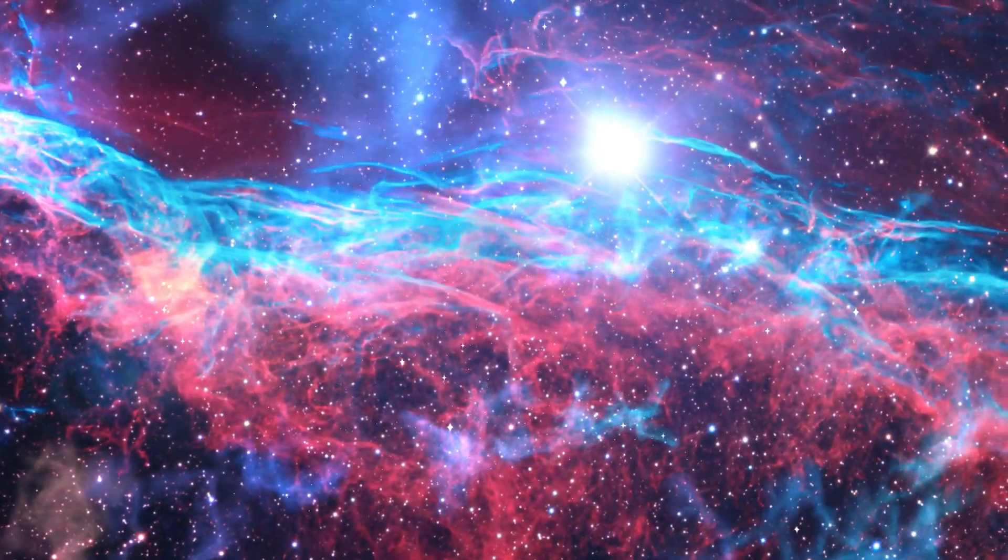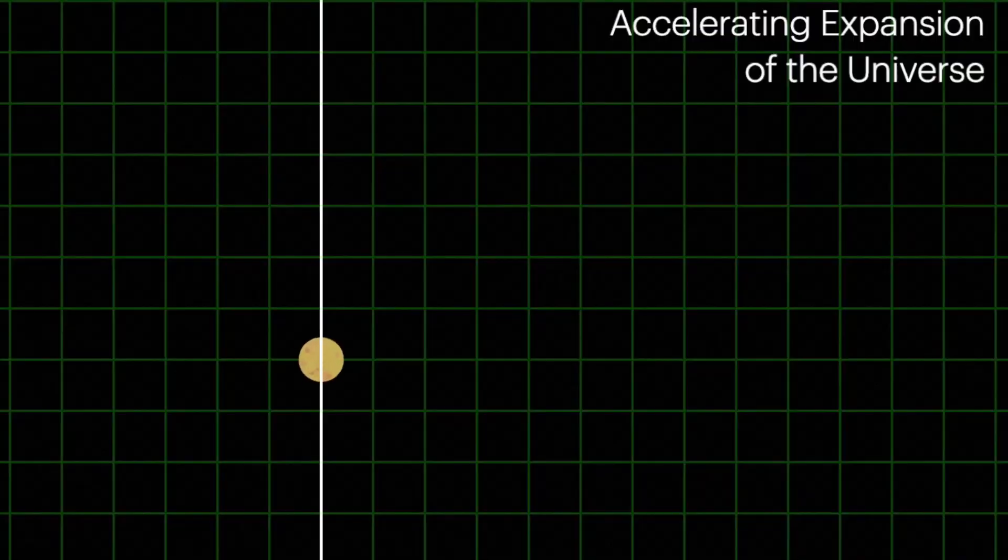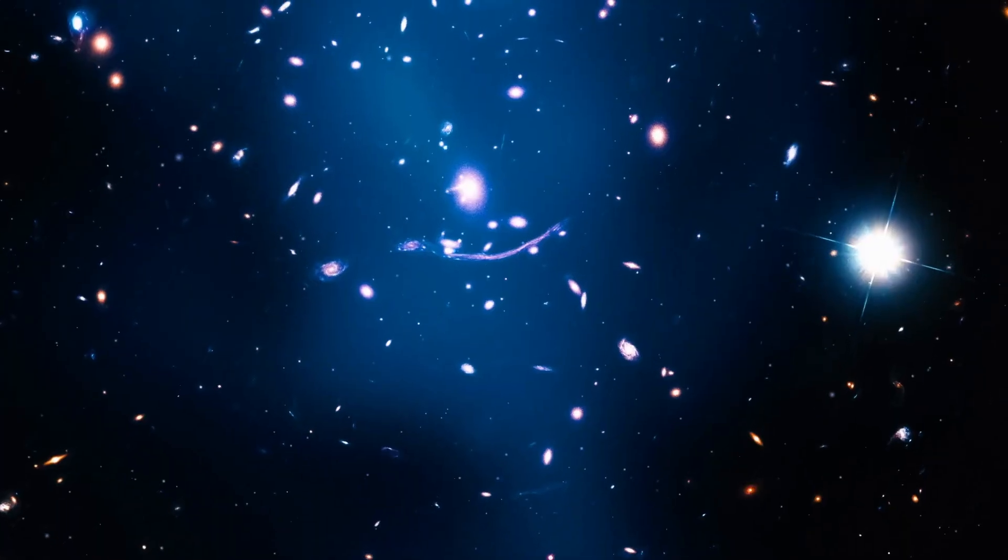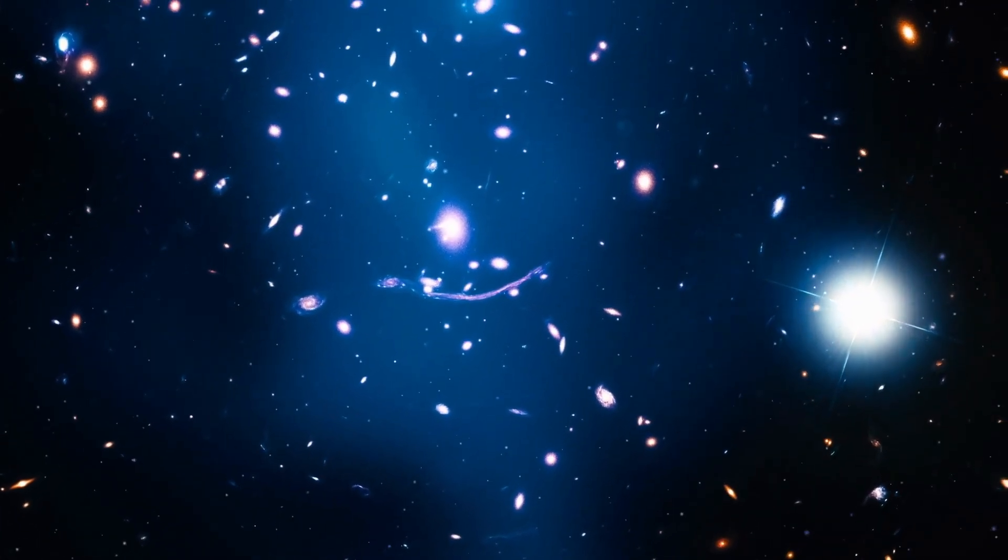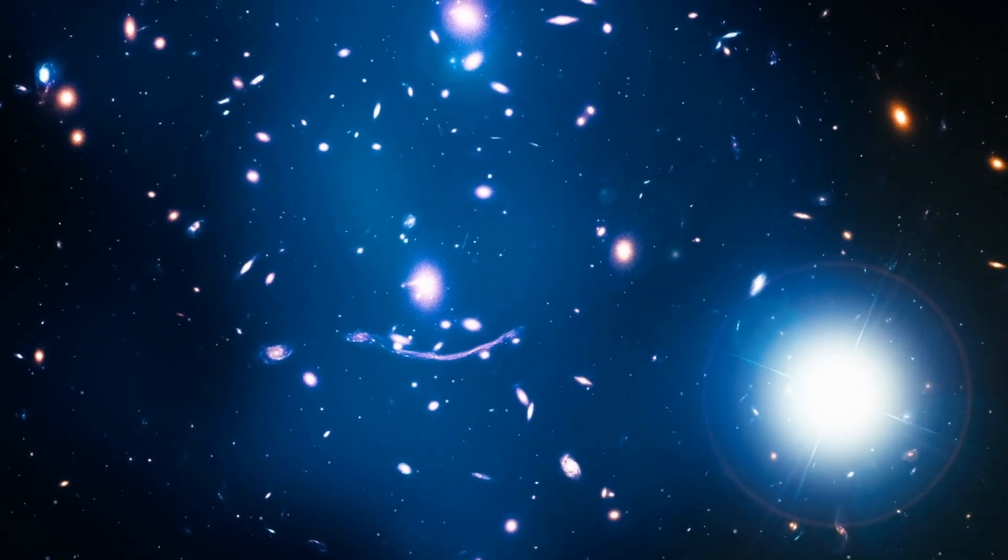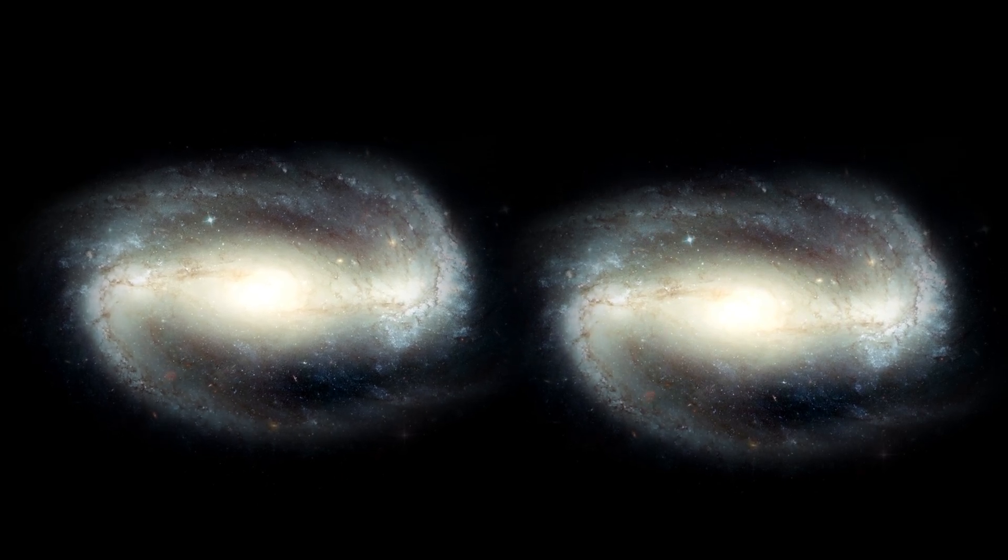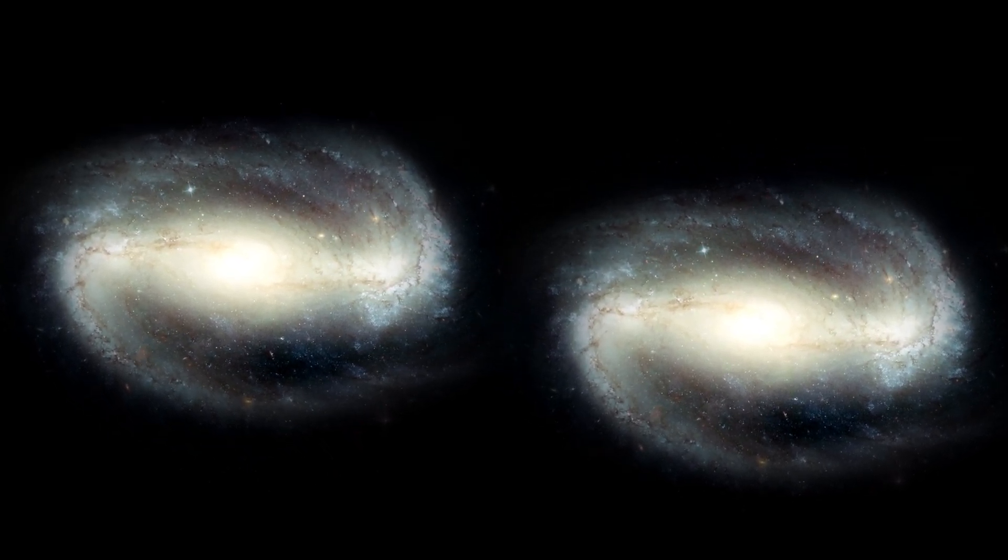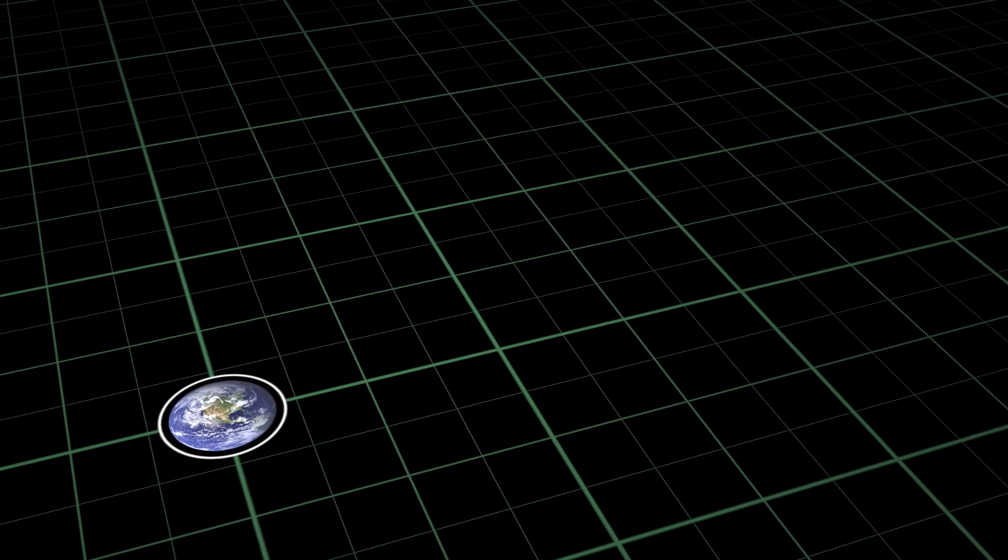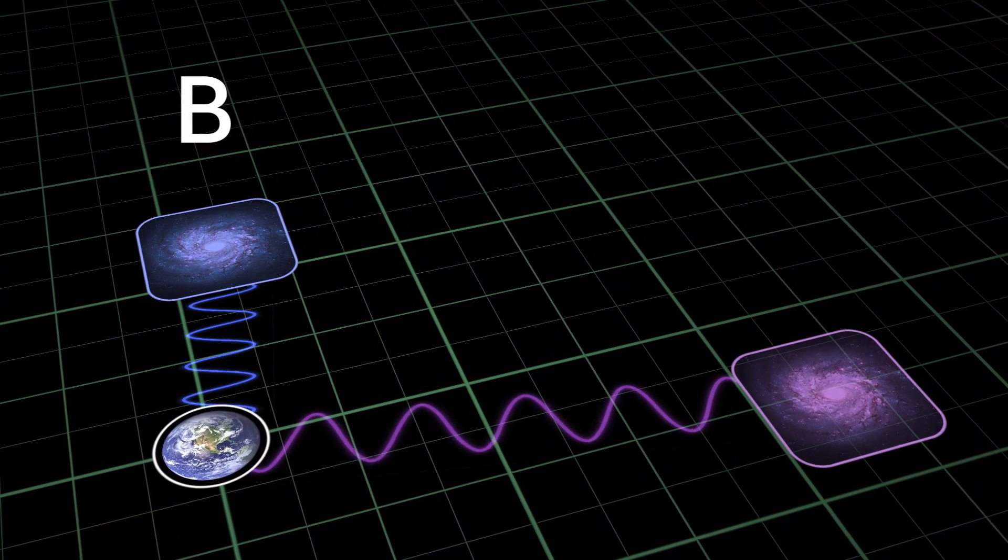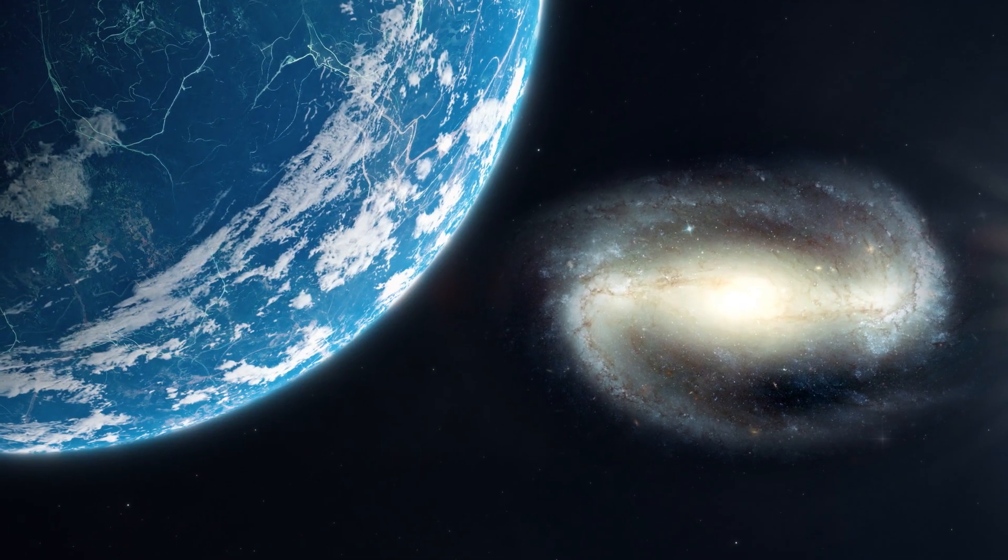Many seemingly simple questions can have complex answers. The question of how fast the universe is expanding, while appearing straightforward, is central to a research puzzle that has confounded experts for years. It is now well established that the universe has been expanding since its inception about 13.8 billion years ago. Consequently, galaxies are moving away from each other at a rate proportional to their distance. For instance, if galaxy A is twice as far from Earth as galaxy B, its separation from us is also increasing twice as fast.